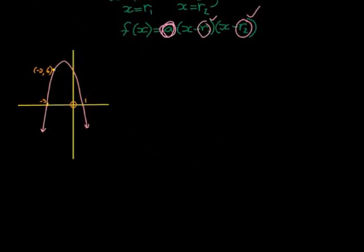Here we can see a question where we are given the two roots, x equals negative 3 and x equals 1, and we're given another point, the point negative 2 comma 6.